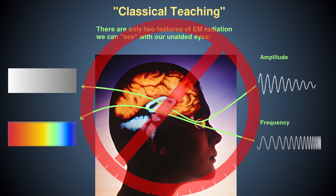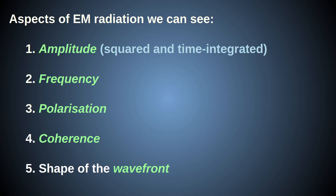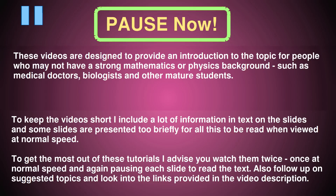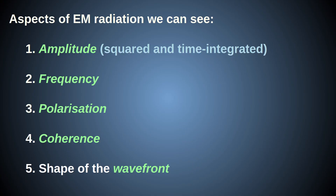This is wrong — or at least it's an oversimplification. In fact, the characteristics of EM radiation that we can detect with the unaided eye through visual perception are shown in this list, and in this video I'll briefly discuss each one.